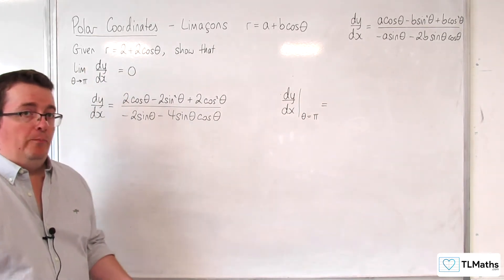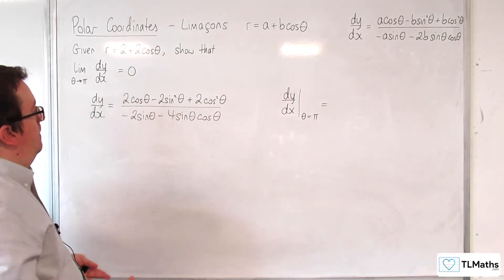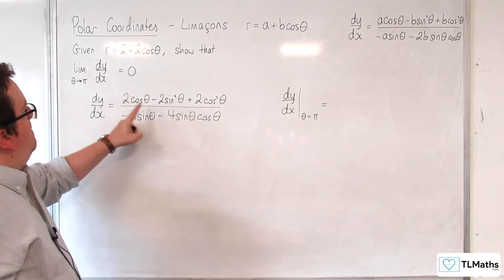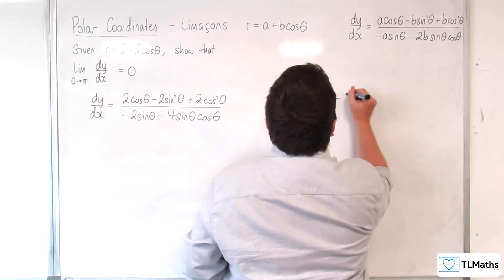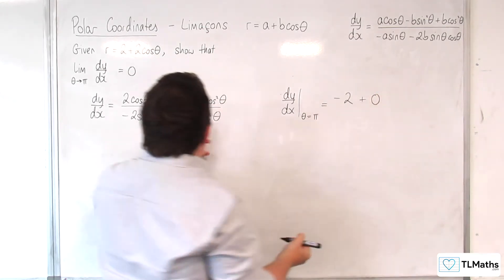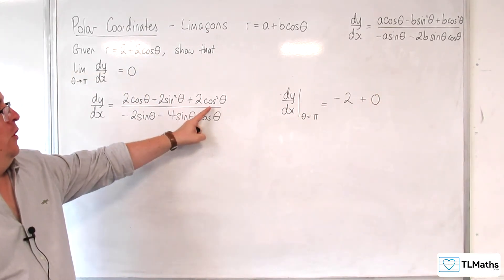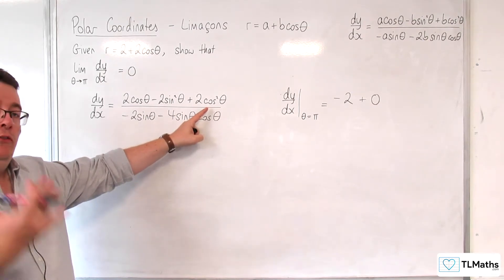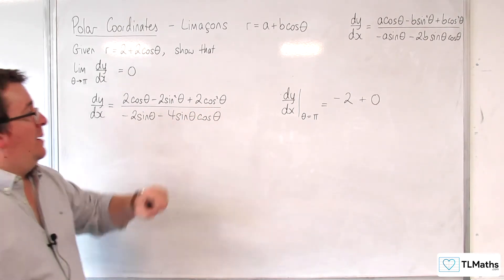Well, cosine of pi is minus 1, so we get minus 2. Sine of pi is 0, so that's plus 0. And then we've got 2 lots of cosine squared of pi. Cosine squared of pi is just going to be 1, so we get plus 2.